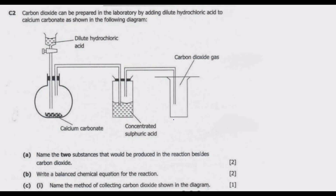By adding dilute hydrochloric acid to calcium carbonate, as shown in the following diagram. We have dilute hydrochloric acid, and carbon dioxide is one of the products. This is then passed into concentrated sulfuric acid.